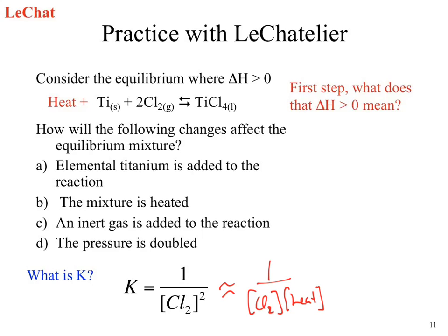If we change the pressure — if we double the pressure — we'd be effectively increasing the concentration of chlorine by doubling the pressure. So if you increase the pressure, what happens? Chlorine concentration increases, which means what happens to our number at the end? It decreases. Q is less than K, meaning again we form more products.